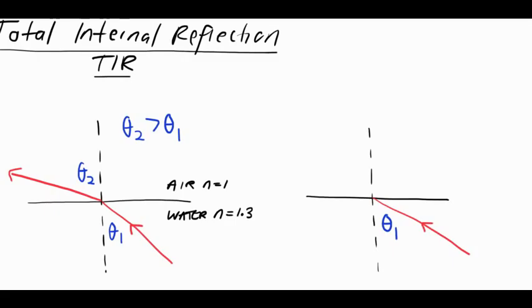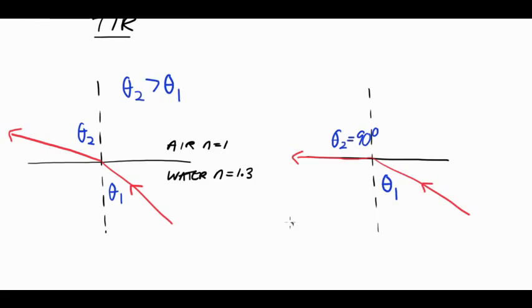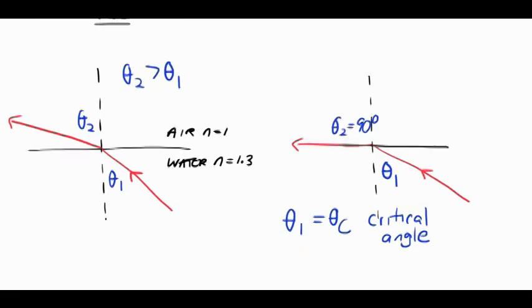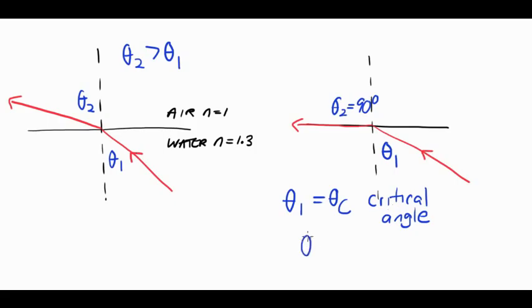The largest possible angle of refraction you can get is a situation where the angle of refraction is so large that it bends at an angle of 90 degrees. So in this case, theta 2 is equal to 90 degrees. Anything more than that and it won't be entering into the air anymore. When this occurs, we give the angle of incidence a special name — we call it the critical angle. The critical angle occurs when the angle of refraction is equal to 90 degrees.